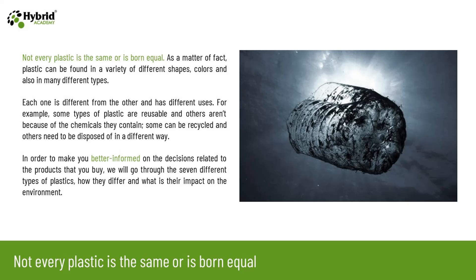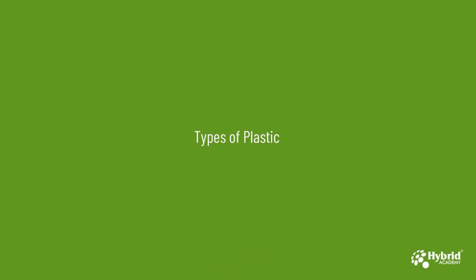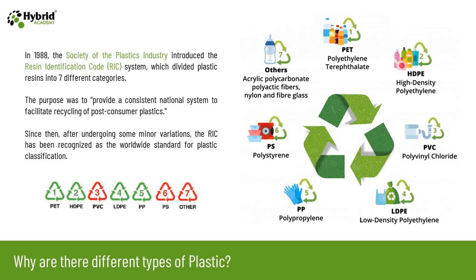There are seven different types of plastic. In 1988, the Society of the Plastics Industry introduced the Resin Identification Code (RIC) system, which divided plastic resins into seven different categories. The purpose was to provide a consistent national system to facilitate recycling of post-consumer plastics.